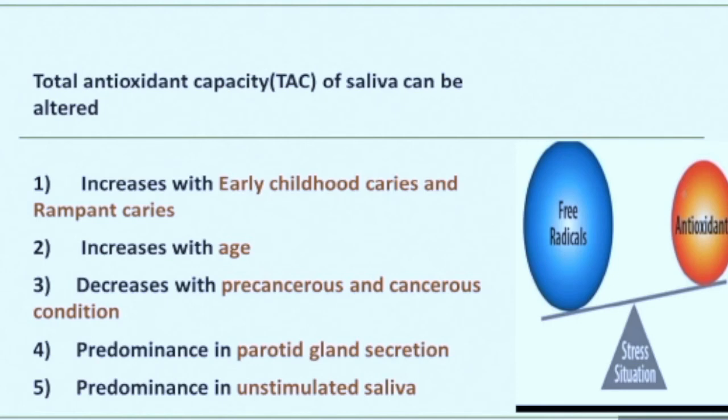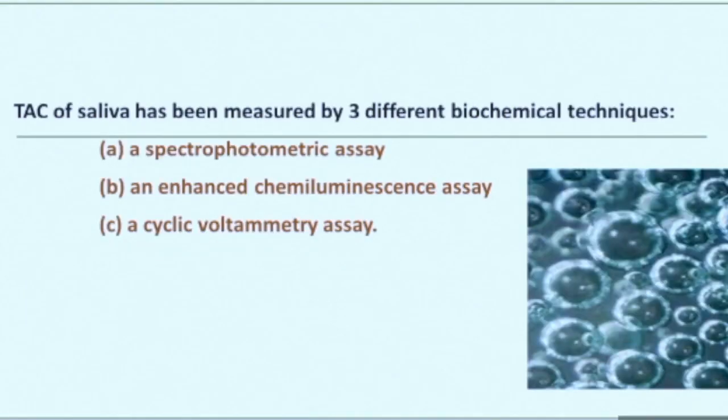Total antioxidant capacity decreases with precancerous and cancerous conditions. It is found to be predominant in unstimulated saliva and in parotid gland secretion. Total antioxidant capacity of saliva has been measured by three different biochemical techniques: A, a spectrophotometric assay; B, an enhanced chemiluminescence assay; C, a cyclic voltammetry assay.